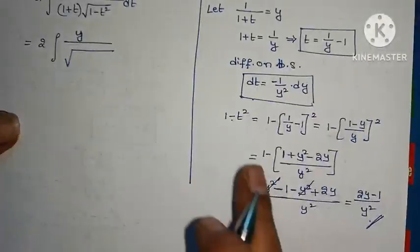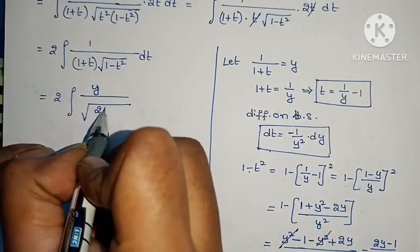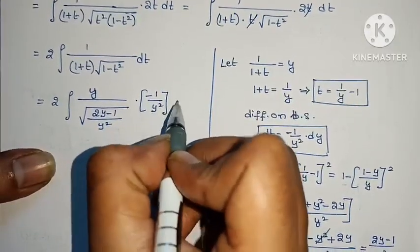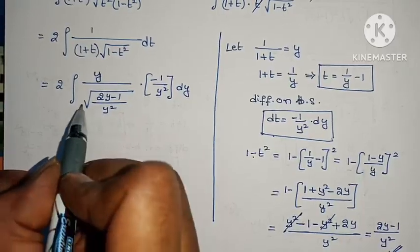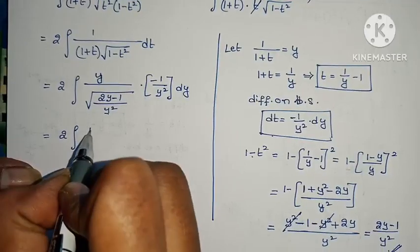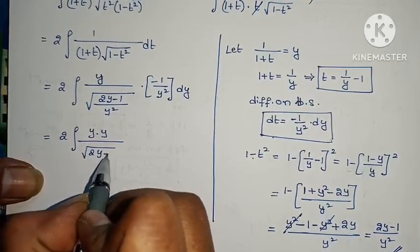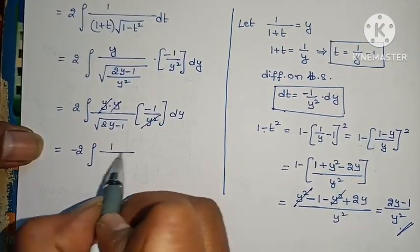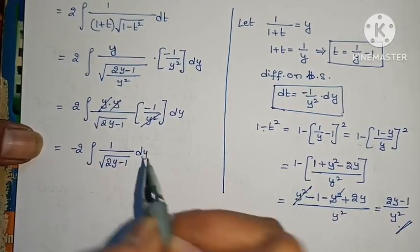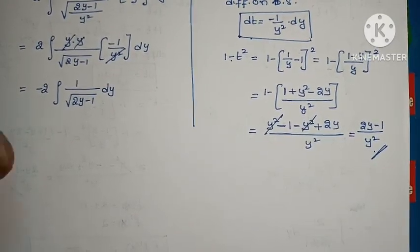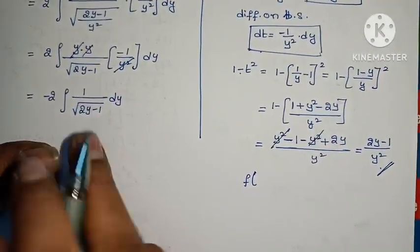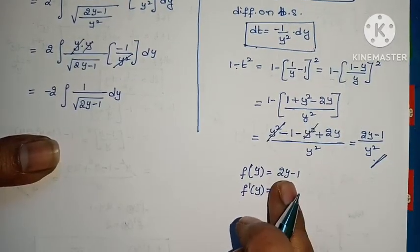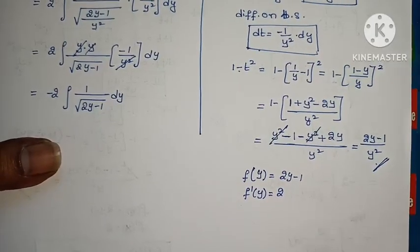So root of (1 minus t squared) equals root of (2y minus 1 by y squared). Substituting into the integral with dt equals minus 1 by y squared dy, and the y squared cancels, we get minus 2 times integral of 1 by root of (2y minus 1) dy.